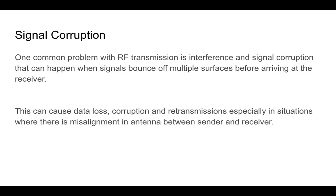Another common design challenge is signal corruption. Once you transmit a radio frequency signal from a sender to a receiver, the signal can bounce off multiple surfaces before arriving at the receiver. This corrupts the signal, creates data loss, and results in the receiver requesting retransmission. You need to be aware of the different surfaces and walls and obstructions between the source and the receiver — it's not just interference, but also physical obstructions between sender and receiver.